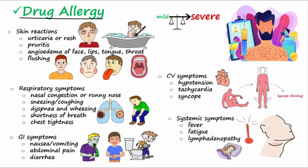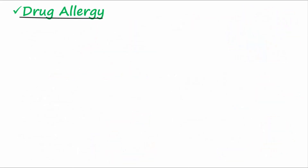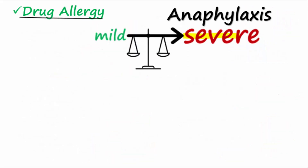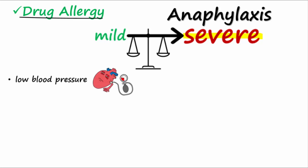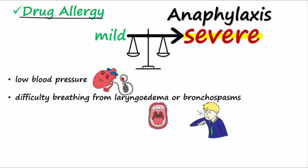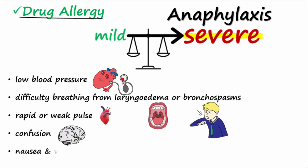Which of those symptoms are manifested is determined by the particular drug and individual patient response. Anaphylaxis is a severe life-threatening allergic reaction and may include some or all of the following symptoms: low blood pressure, difficulty breathing from laryngeoedema or bronchospasms, rapid or weak pulse, confusion, and nausea and vomiting.